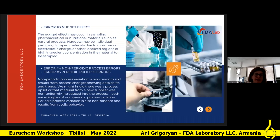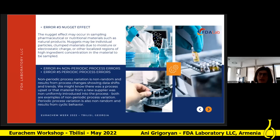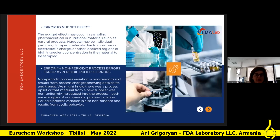The nugget effect may occur in sampling pharmaceutical or natural matrix, such as natural products or food supplements. A nugget may be an individual particle, clumped material due to moisture or electrostatic charge, or other localized regions of higher concentration in the material to be sampled. For example, when determining pesticides in vegetables or fruit, pesticides accumulate more in the peels, so this must be taken into account during sample preparation.